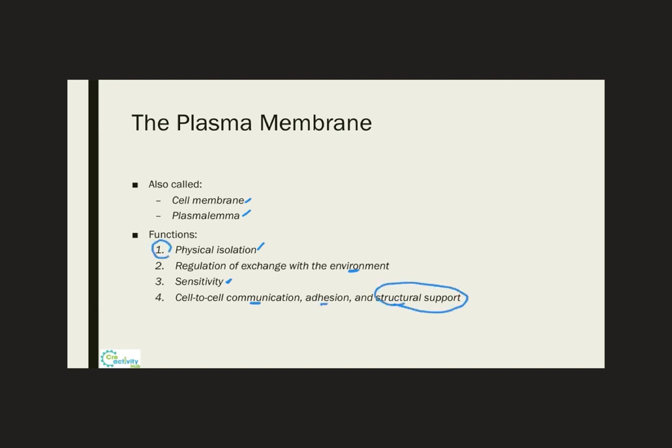With regards to physical isolation, it will form this physical barrier that separates the inside of the cell from the surrounding extracellular fluid. With regards to regulation of exchange with the environment, it is not everything that a cell wants to have inside of it or wants to allow to go inside of it. Therefore, the plasma membrane will control the entry of ions and nutrients and, in exchange, it will eliminate waste products and also release certain secretory products through secretory vesicles.